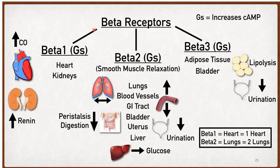Beta receptors are subdivided into three types: beta-1, beta-2, and beta-3, all stimulatory. Beta-1 is present at the heart and kidney — stimulation increases force of cardiac contraction and increases renin release. Beta-2 receptors are located in the lungs (causing bronchodilation), blood vessels (causing vasodilation), GI tract, bladder, and uterus — causing relaxation of smooth muscle, decreased peristalsis, and decreased urination. Glycogenolysis and lipolysis occur in adipose tissue via beta-2. Bladder relaxation also causes retention of urine.